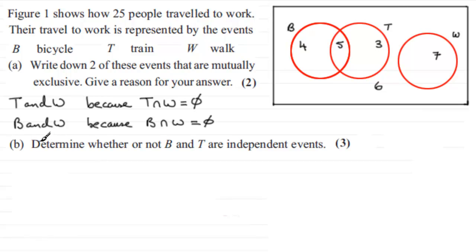Now in part B, we need to determine whether or not B and T are independent events. Now, this is a rule you should know: that if two events, B and T in this case, are independent, let's just mark that in. If B and T are independent, then the rule that you should be aware of is this, that the probability of the intersection of them, B and T, would be equal to the probability of B multiplied by the probability of T. Or the other way round. Obviously it doesn't matter whether you do T, probability of T times probability of B. But nonetheless, this result would hold.